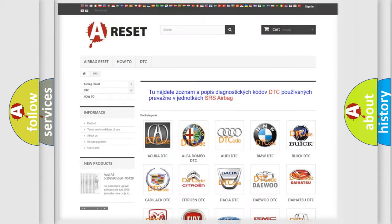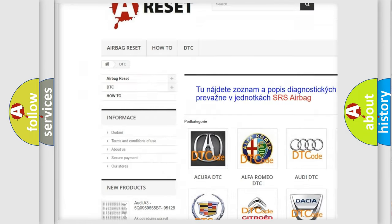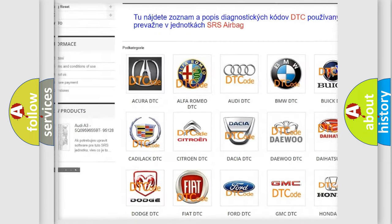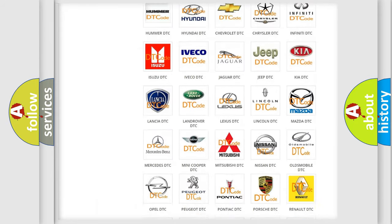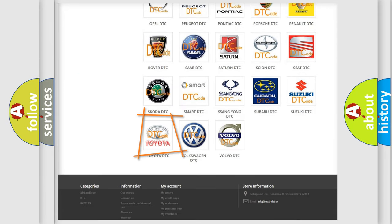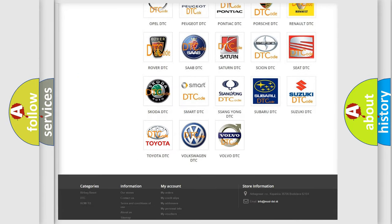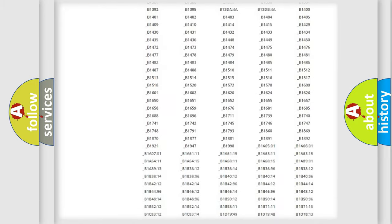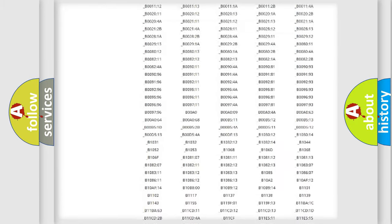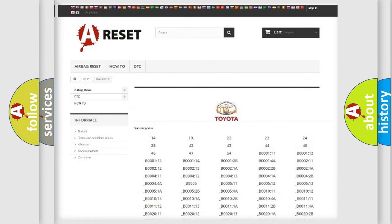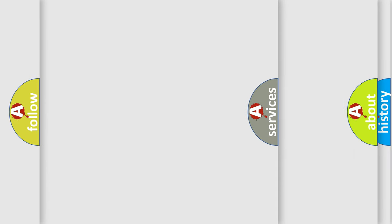Our website airbagreset.sk produces useful videos for you. You do not have to go through the OBD2 protocol anymore to know how to troubleshoot any car breakdown. You will find all the diagnostic codes that can be diagnosed in Toyota vehicles, and many other useful things.